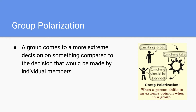Next we have group polarization, and this occurs when a group comes to a more extreme decision on something, compared to if those individuals had made their decisions while not being in a group. For instance, in the picture on the right, an individual says that smoking is bad, but once they get into a group, they come to the more extreme decision that smoking kills. He goes from thinking smoking is bad to, once in the group, saying smoking should be banned. So what we're getting is a more extreme opinion that occurs once you're in a group.